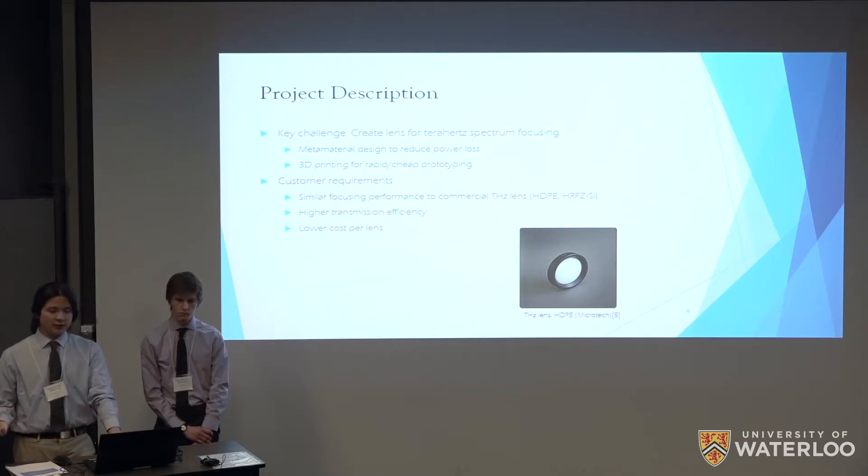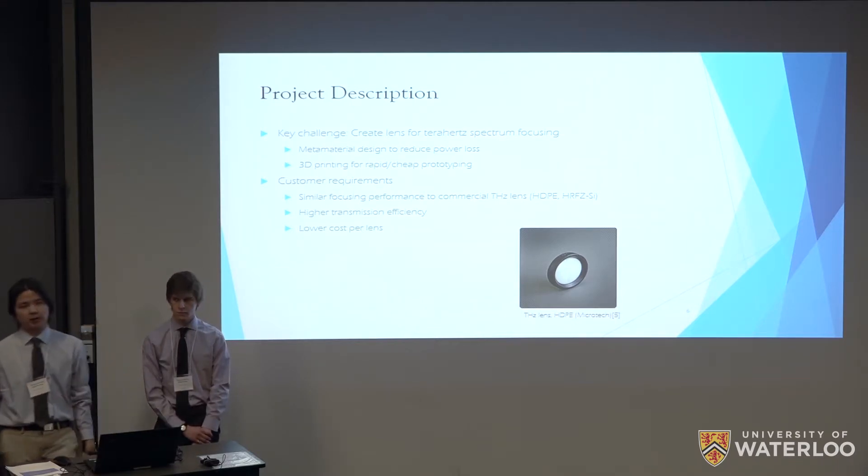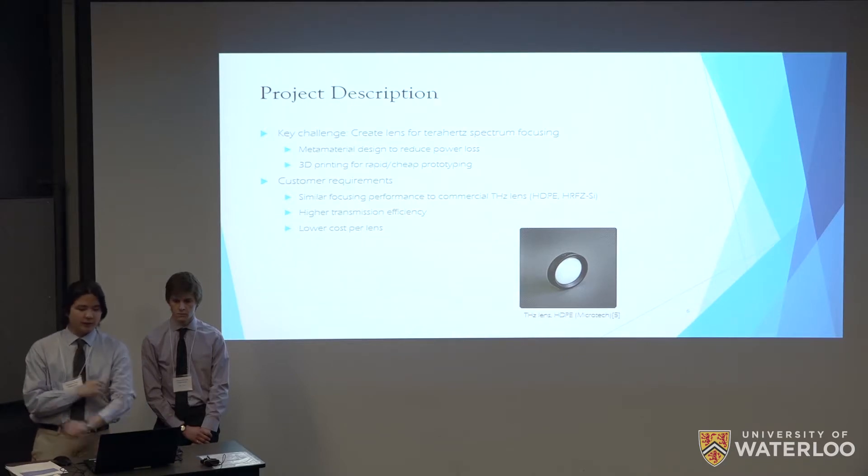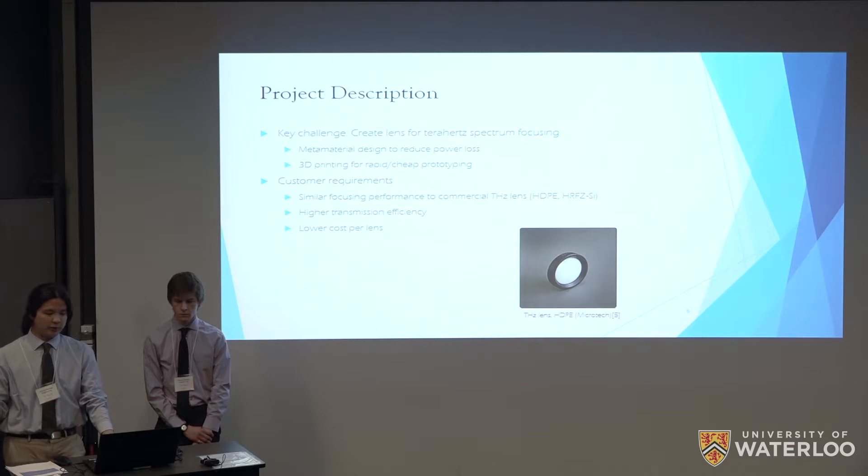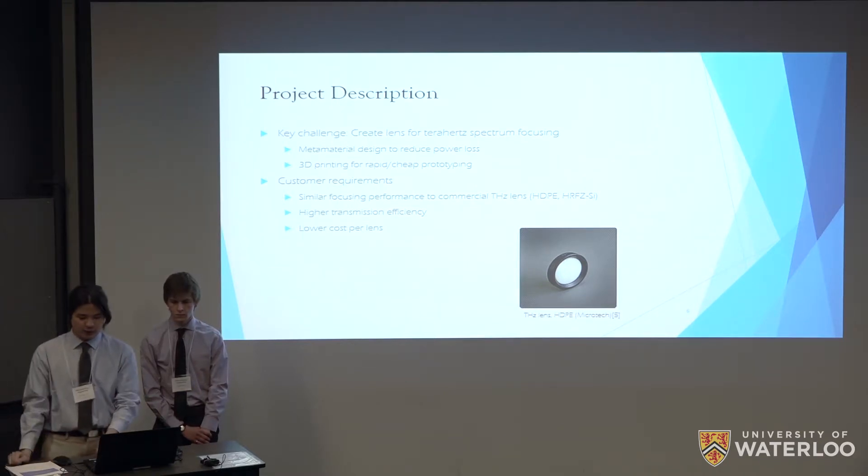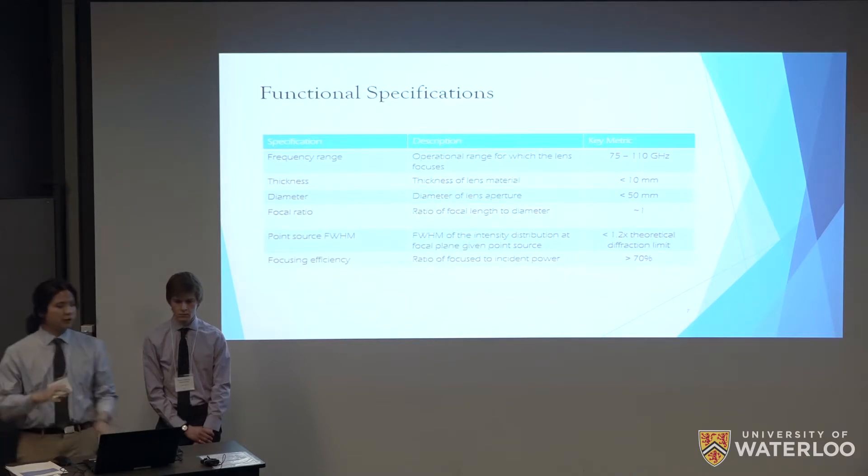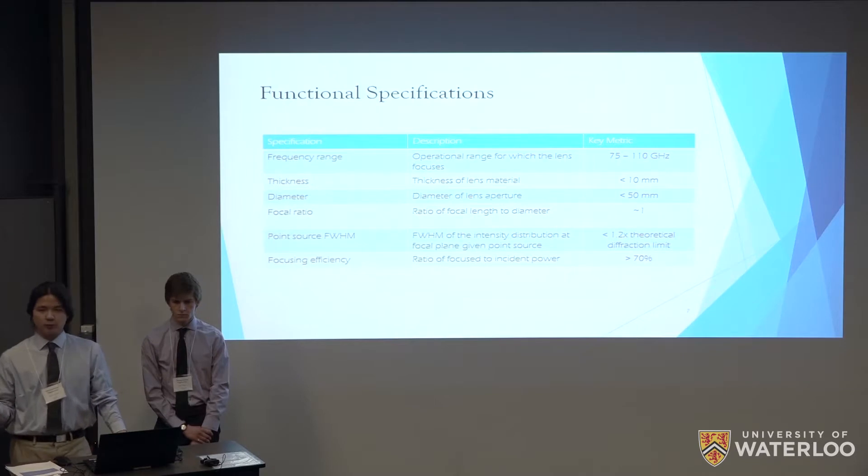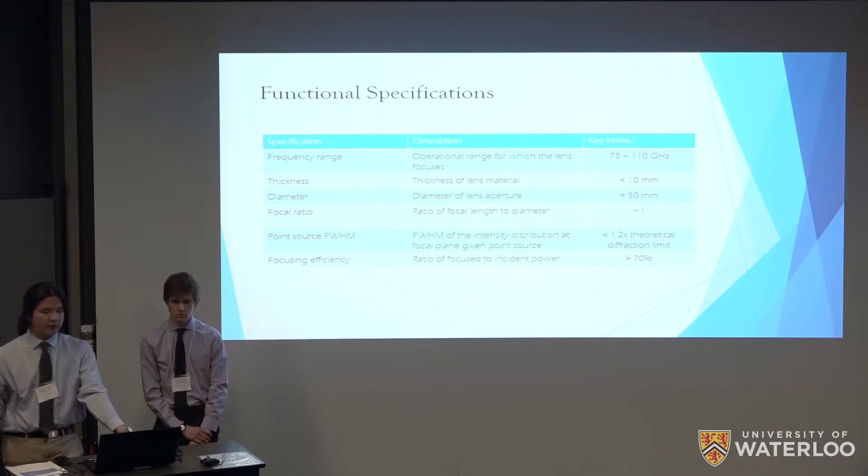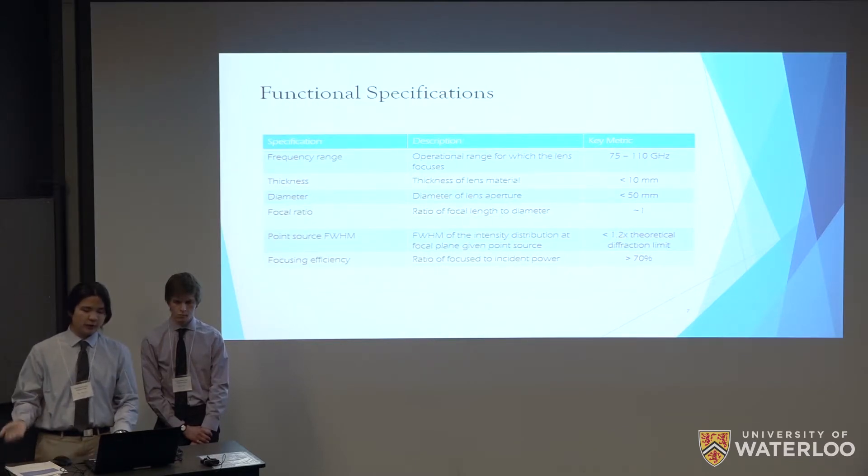Our customer requirements are specifically that it should have a similar focusing function comparable to that of commercial terahertz lenses such as ones made from polyethylene and high-resistant flowstone silicon. From our special features it should have higher transmission efficiency as well as lower unit cost per lens. We can transfer that into functional specifications: we designed this lens to work at frequencies from 75 to 110 gigahertz. Its thickness and diameter should be no more than 10 and 50 millimeters respectively with a focal ratio of around one, and the full width half maximum response to a point source should be no greater than 1.2 times the theoretical diffraction limit. The focusing efficiency, that is the ratio of the focused power to the input power, should be greater than 70%.